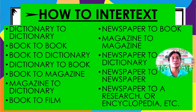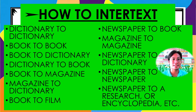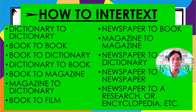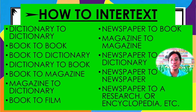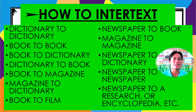There are also other ways to linearly or manually connect to other texts or intertext between or among texts: dictionary to dictionary, book to book, book to dictionary, dictionary to book, book to magazine, magazine to dictionary, book to film, newspaper to newspaper, and to research, encyclopedia, or others. These are different ways to manually connect to other texts or to intertext.